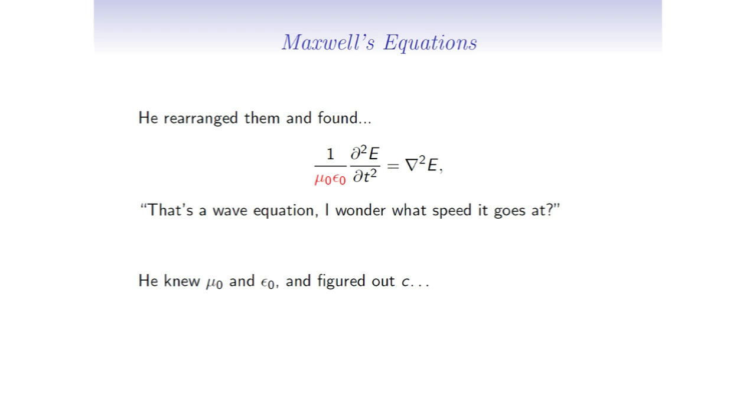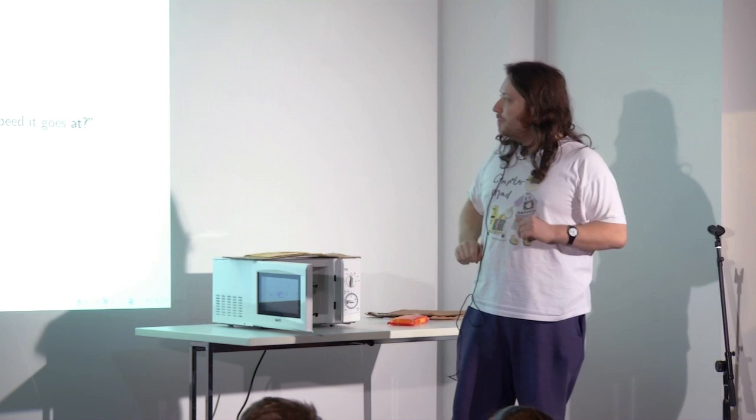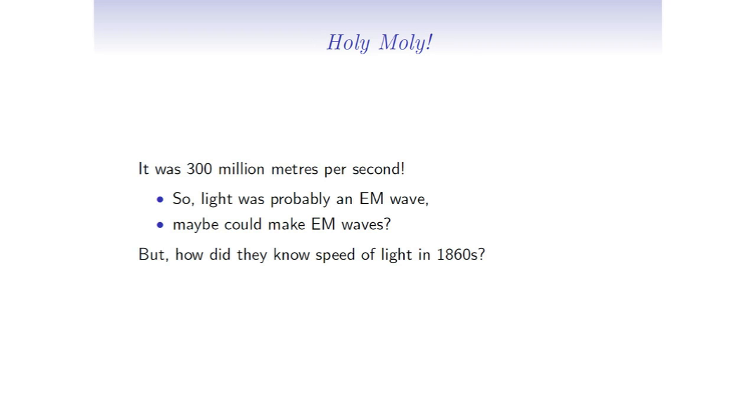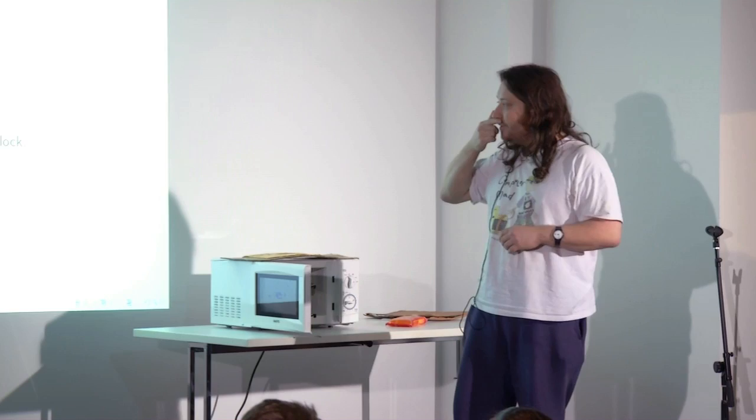And he said, holy crap, that's a wave equation. I know these numbers here, so I can figure out the speed. So he stuck in mu zero and epsilon zero, which people had known for a while, to figure out what the speed of this wave would be. And it turned out to be 300 million meters per second. And he went, wow, that's amazing. That must mean light's probably an electromagnetic wave, because he already knew the speed of light. And he also thought maybe you can make electromagnetic waves deliberately, and that's where we get radio from later.